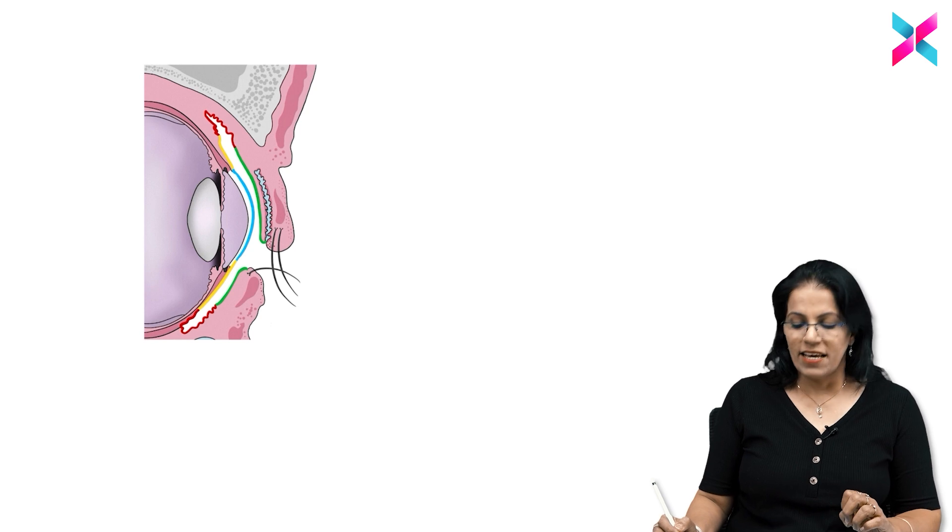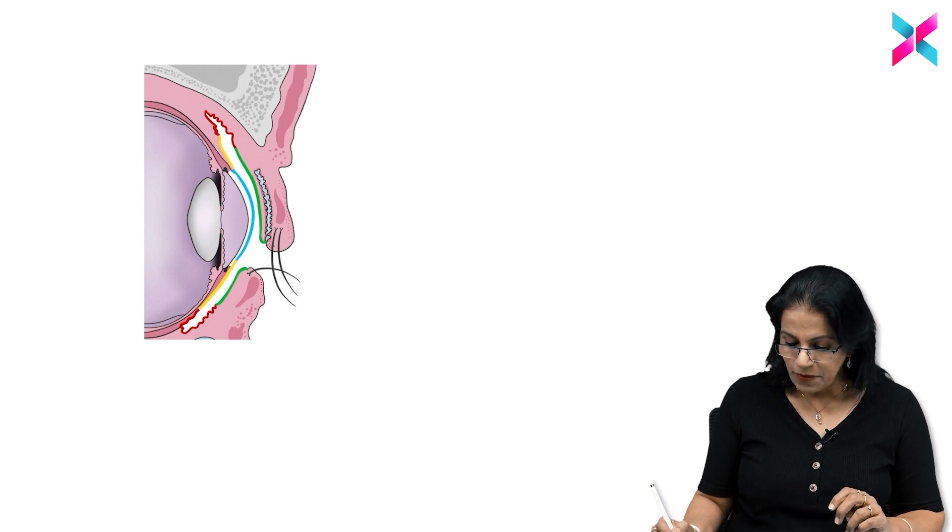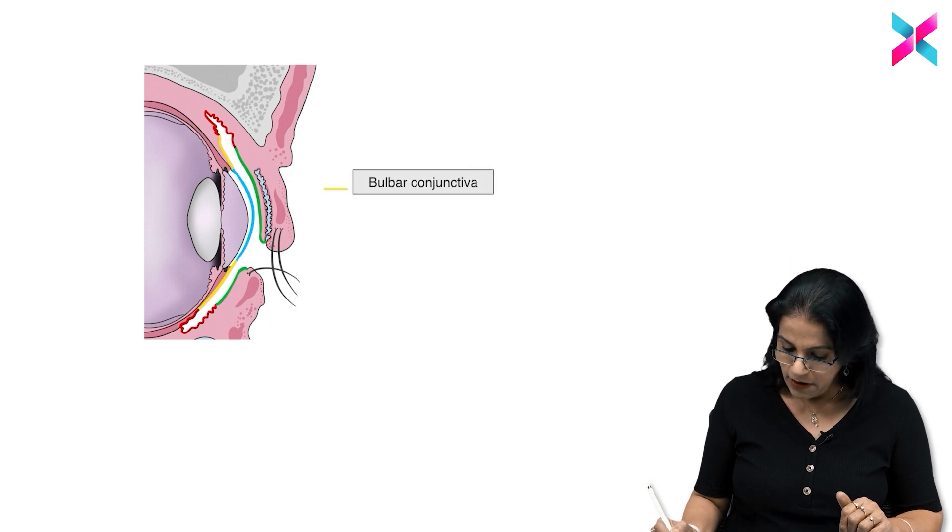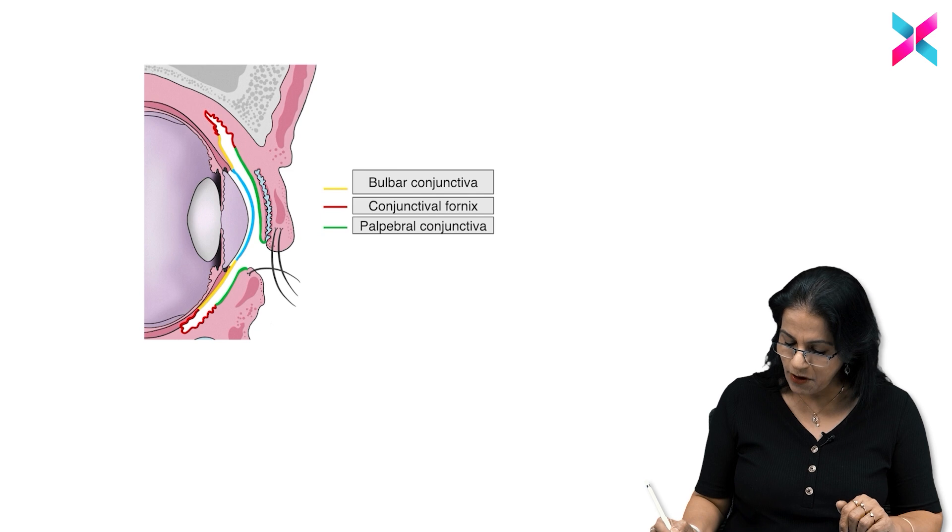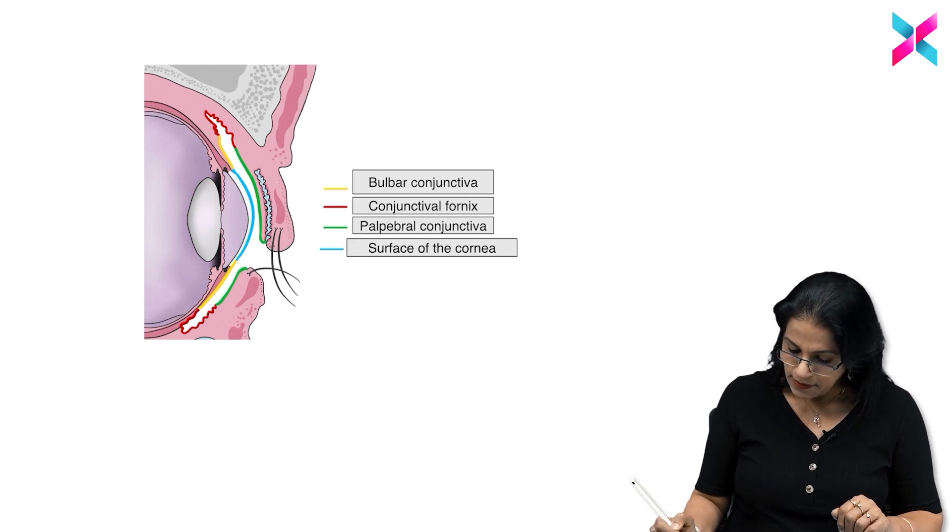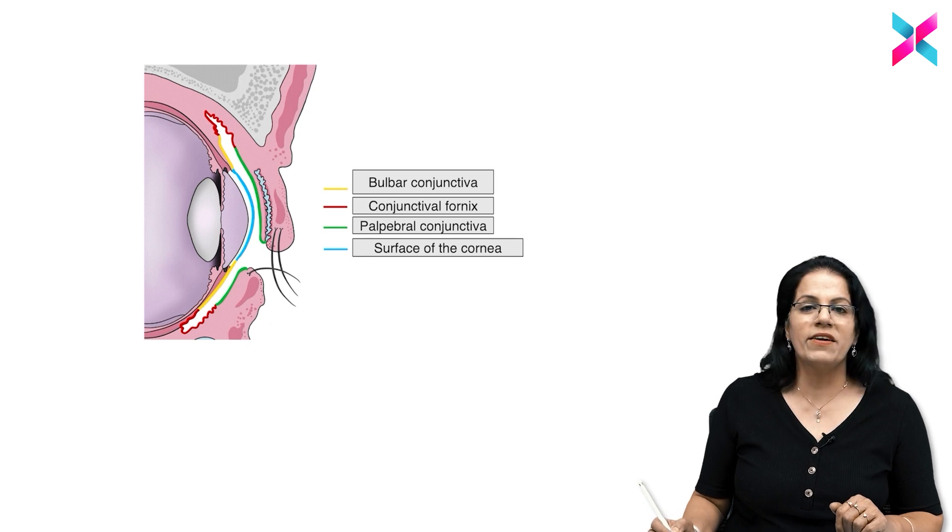Next important thing in anatomy is we have to keep in mind, let us have a look at this one. We know this is the lid and the different parts of conjunctiva is being shown. What is important? What is bulbar conjunctiva? Again we are repeating this is the fornix and this is the palpebral, the color coding is in front of you and of course this is just the surface of the cornea which is being shown here.